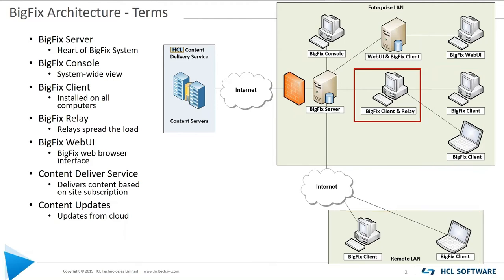Next, you have the BigFix relay. Relays help spread the load off the BigFix server. You typically want these in pairs so that if one fails, you can fail over to a second relay. You want a relay on the other side of a WAN link — you only want to cross that WAN link once with content. A relay has two requirements: it's always on, and it has sufficient disk space.